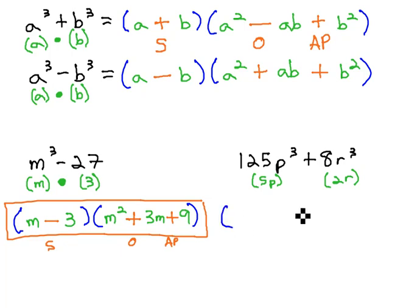I'm now ready to make my binomial and trinomial factors. The binomial is easy, as I just stick those roots I just found, 5p and 2r. In the trinomial, we start by squaring 5p. 5 squared is 25, p squared. Then we multiply them together. 5p times 2r is 10pr. Finally, I square the 2r to get 4r squared.